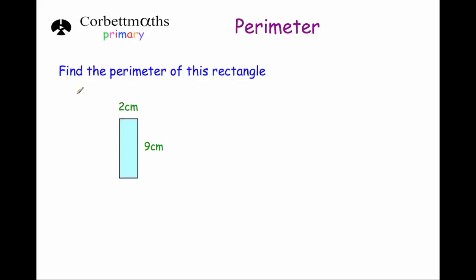So here's our first question — find the perimeter of this rectangle. The perimeter of a shape is the distance around the outside, so it's the total distance. For instance, if you started here, you traveled down, across, up and across — the total distance traveled around the outside of a shape. To find the perimeter, you just add up the lengths of all the sides of the shape.